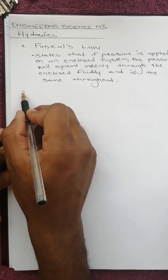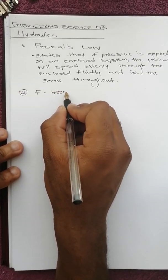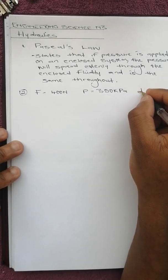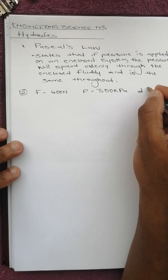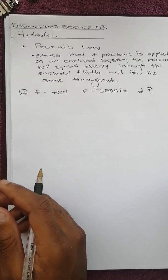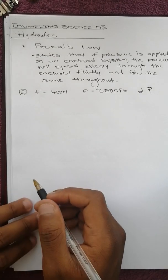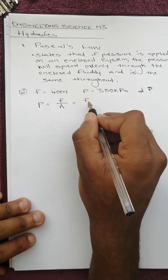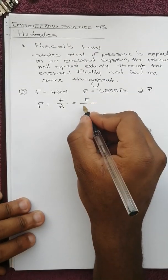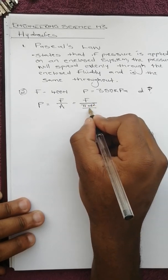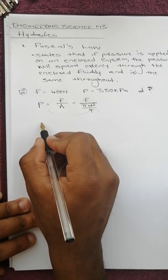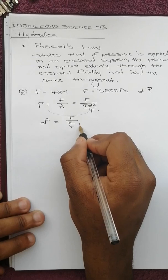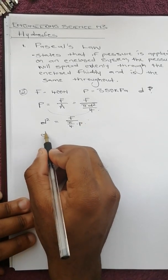For number two, we are given a force of 400 newtons and a pressure of 350 kilopascals, and we are told to calculate the diameter. To do this, we go to the formula sheet and realize that pressure equals force over area. Since it's a pipe, the cross sectional area is pi d squared over four. From these two, we make d subject of the formula: d equals square root of four times force over pi times pressure.